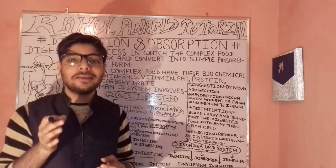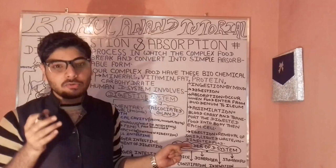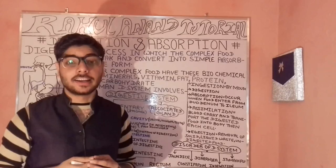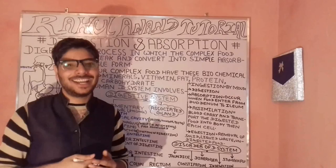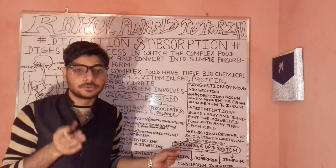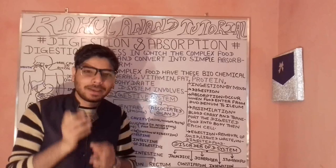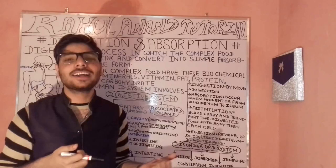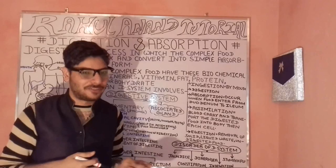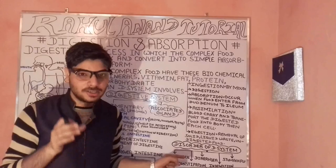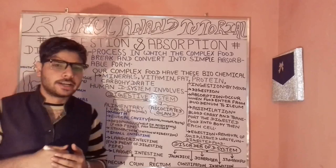In the stomach, maximum digestion occurs. Here you have pepsin, rennin, and hydrochloric acid. Pepsin is present in the inactivated stage, and by the help of HCl it is converted into pepsinogen, which helps activate HCl. Lipase assists in the breakdown of fats. Rennin plays an important role in the coagulation of milk.